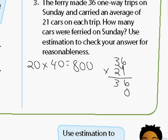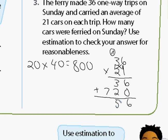Then multiply two times six, which is 12 — carry the one, bring the two down. Next step: two times three is six, plus the carried one is seven. Record that right there. Last step, add it all up: six plus zero is six, three plus two is five, and seven plus nothing is seven. That gives us 756.